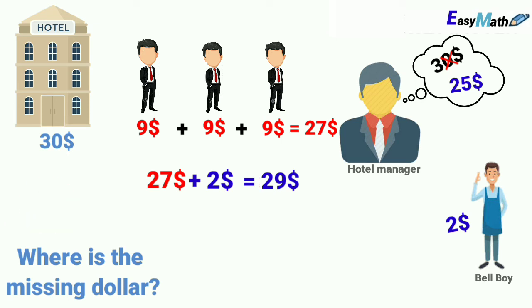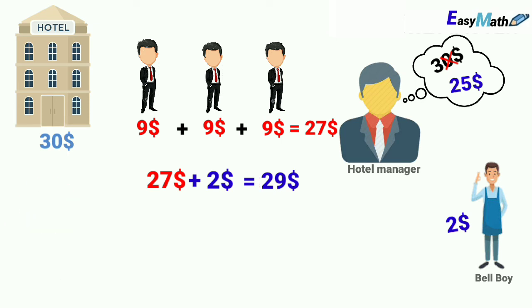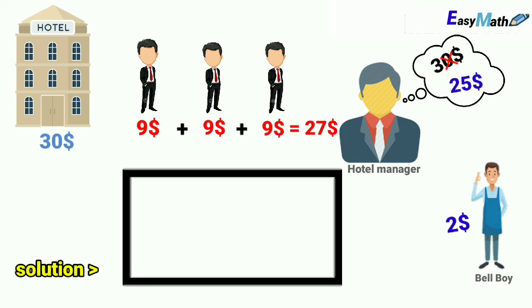So where is the missing dollar? As we know, that dollar is not missing. This is only a trick question. The solution is so simple. The tip is included in the cost of the room and should not be added afterwards.